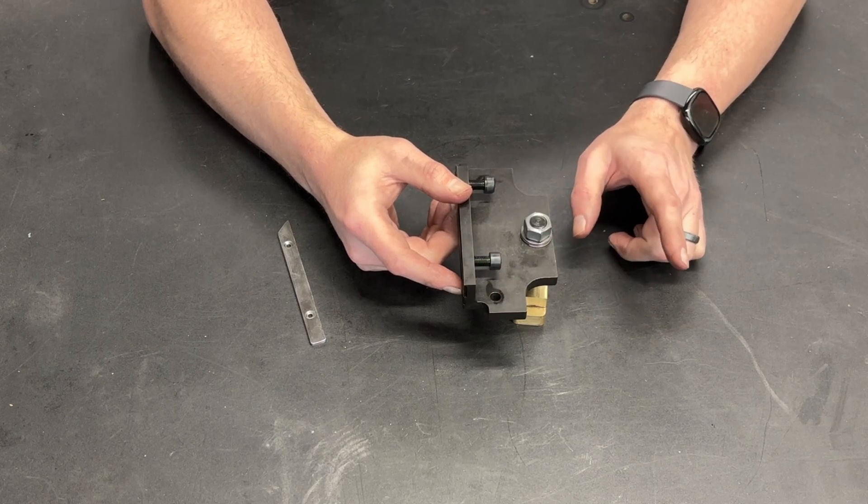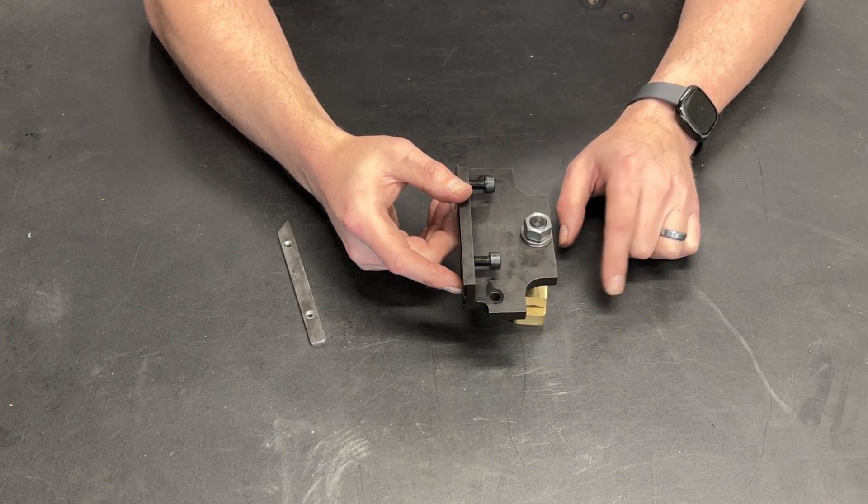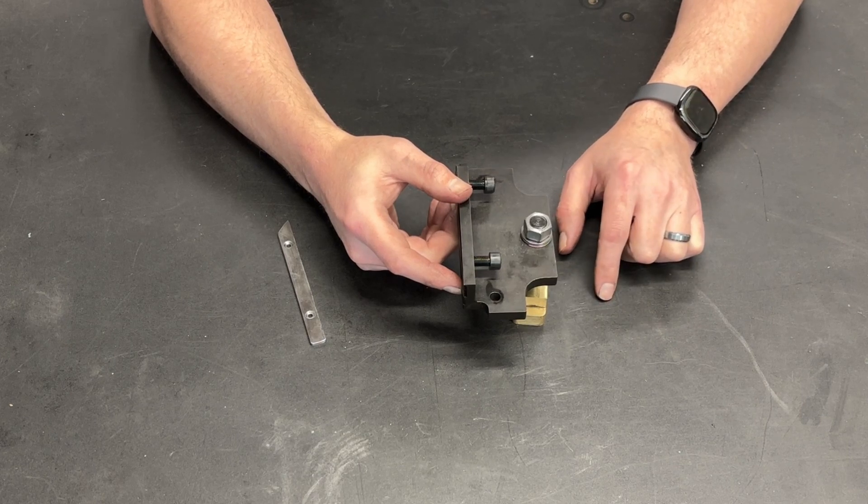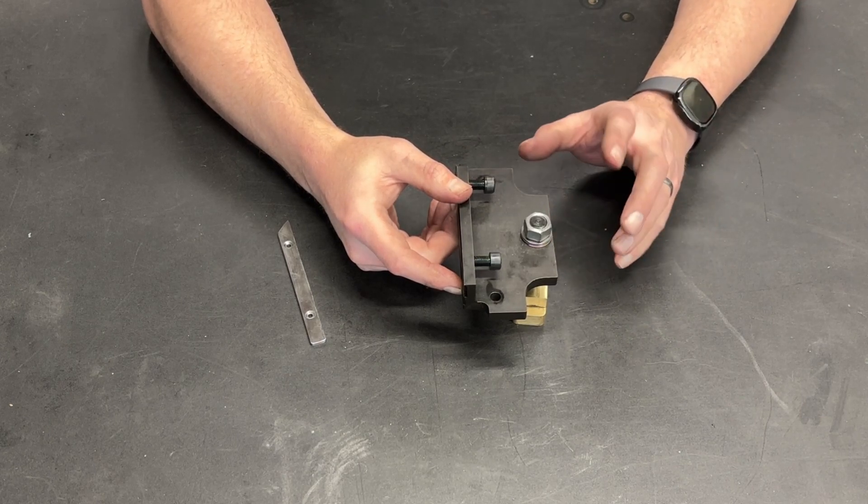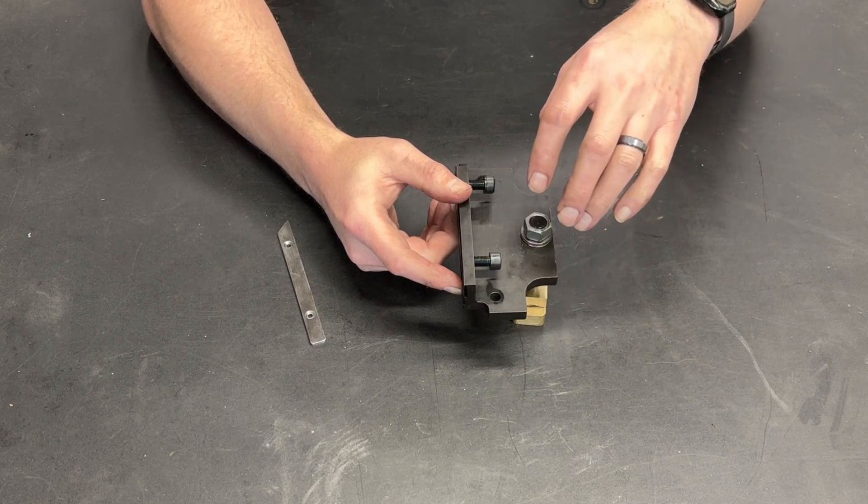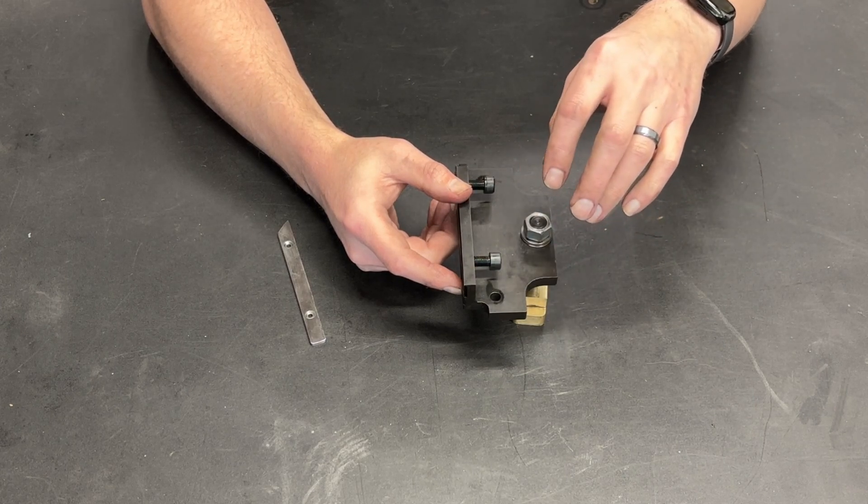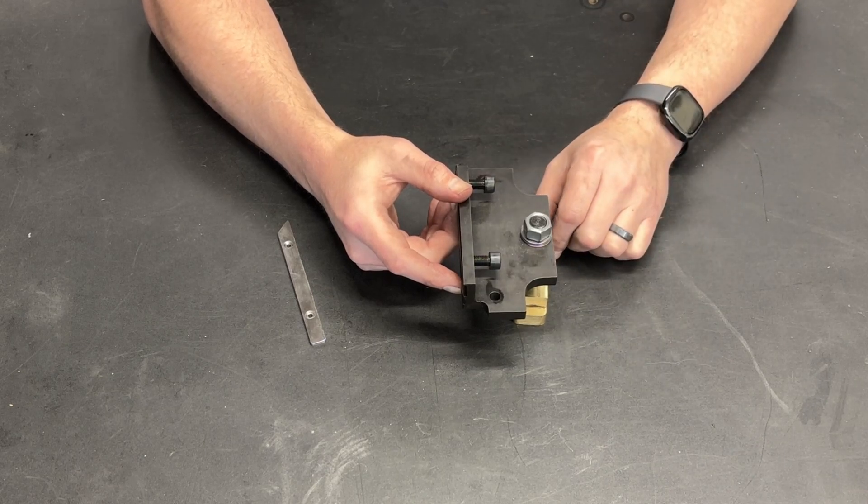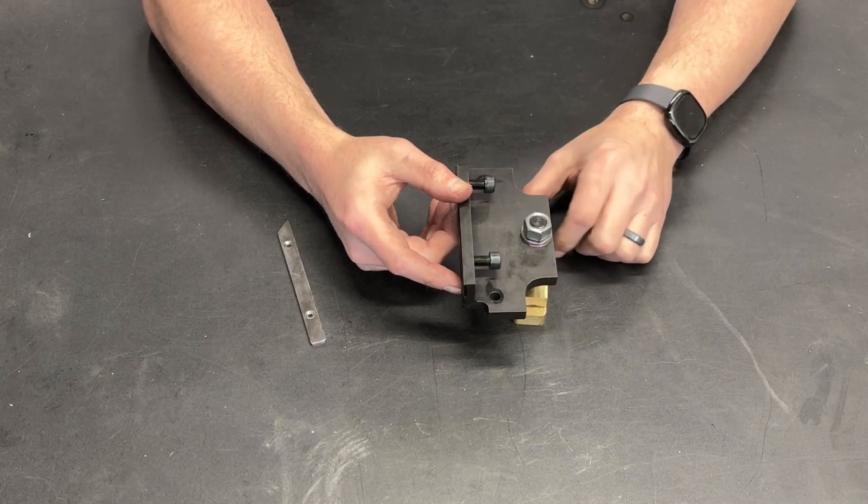And while using the follower rest, if I need to lock the carriage, I can use the factory carriage locks. They're just a little harder to get to. So it's really the best of both worlds. This gives me easy access, it's simple, it's compact, and again, if I need to use that follower rest, I can.